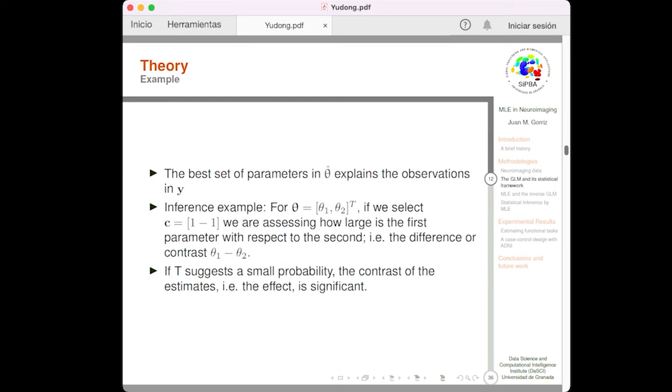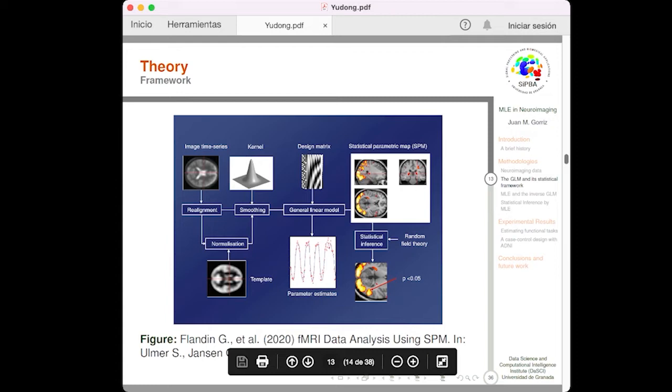If we continue with the example, the best set of parameters in theta explains the observations in y, as I said before. And, for example, if we select the linear compound 1, minus 1, we are assessing how large is the first parameter theta1 with respect to the second parameter theta2. So, the difference or contrast theta1 minus theta2 is large or small. If it is very large, then t suggests a small probability. So, the effect is significant.